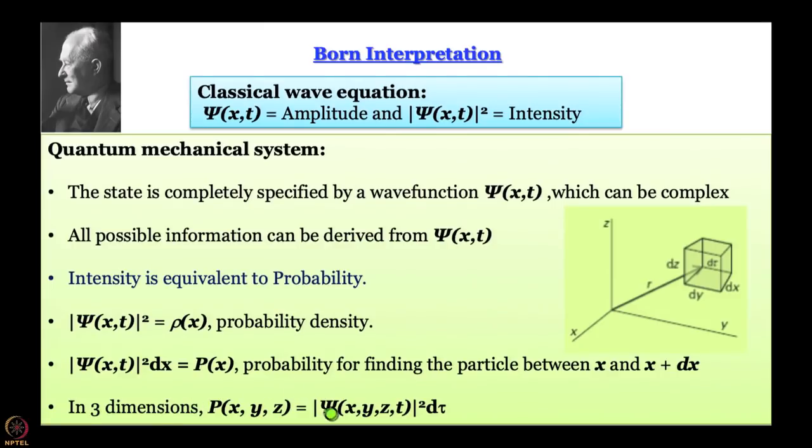In three dimensions, the probability is |ψ(x,y,z,t)|² dτ, where dτ is the volume of a small element with size dx dy dz along x, y, and z respectively. You have to define a small element, no matter how small, and work with it to talk about actual probability. In Cartesian coordinates the volume element always remains the same — dx dy dz — so the shape of the probability distribution is determined by the shape of mod ψ².